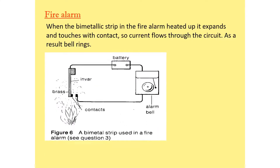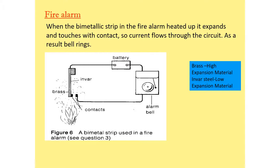Bimetallic strips can be used to control temperature — for example, in heaters or refrigerators. In this example, a bimetallic strip is used in a fire alarm. The strip is made of brass and invar; brass has a higher coefficient of expansion than invar. In case of fire, brass expands more, closes the circuit, and the alarm bell starts ringing, alerting people to the fire.